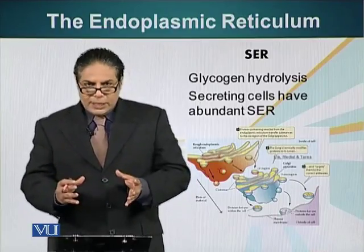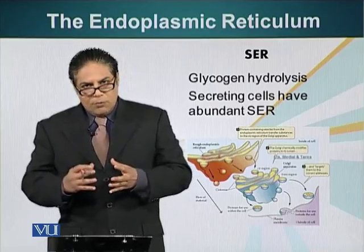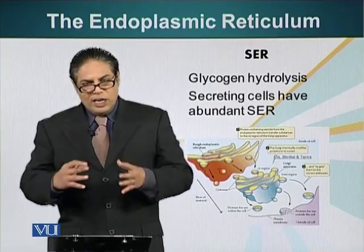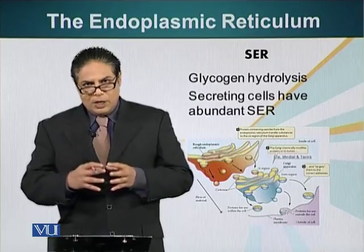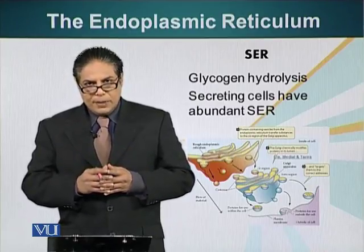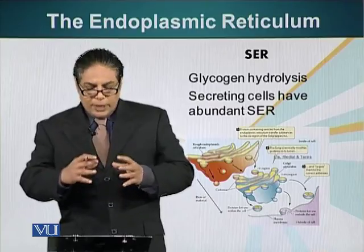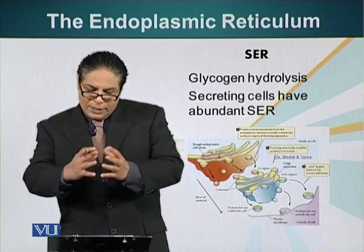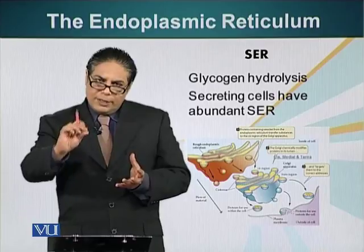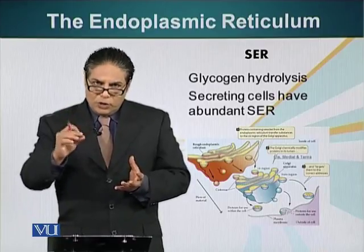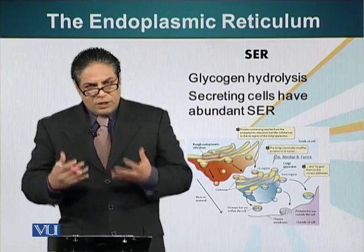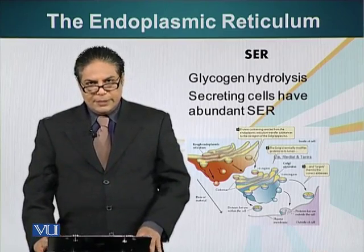The packages released from the endoplasmic reticulum are released from the smooth endoplasmic reticulum part. The smooth endoplasmic reticulum is the site where these vesicles are formed. They will fuse with the Golgi apparatus, which we will talk about next, where further protein modifications take place.